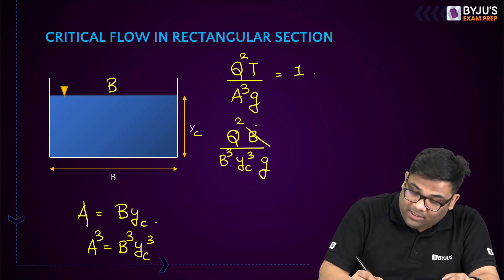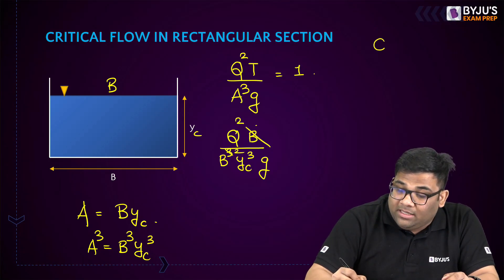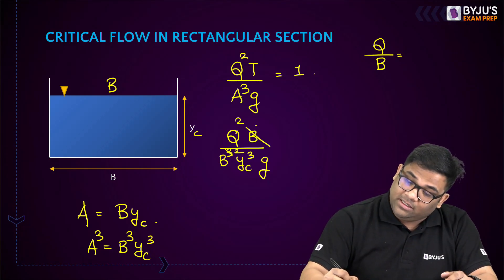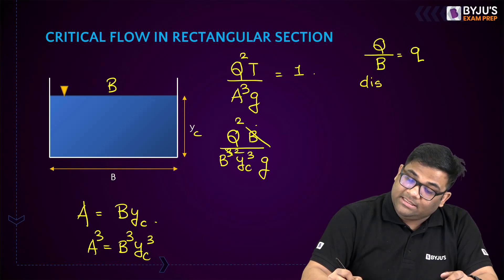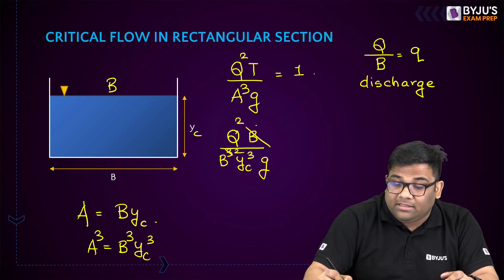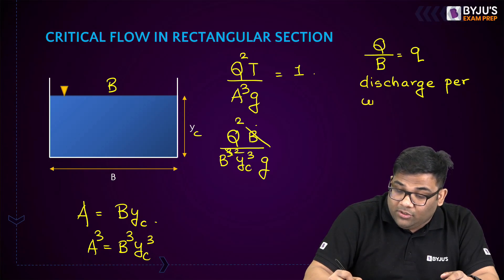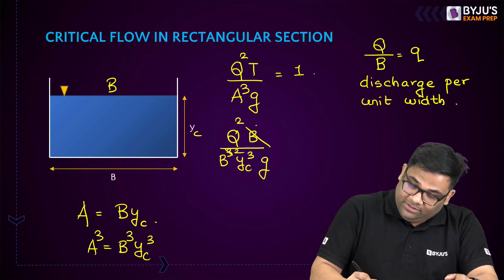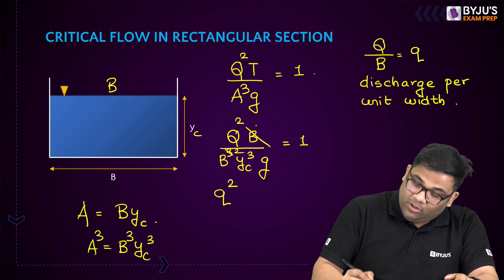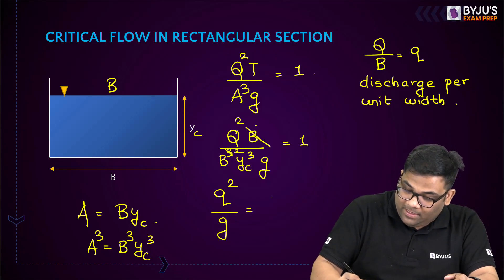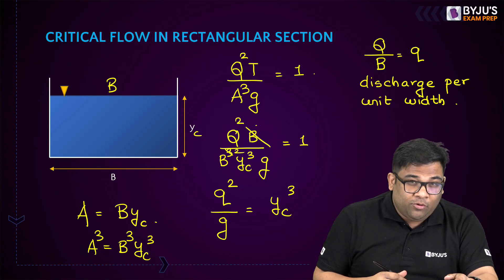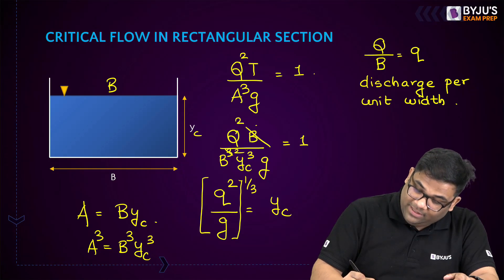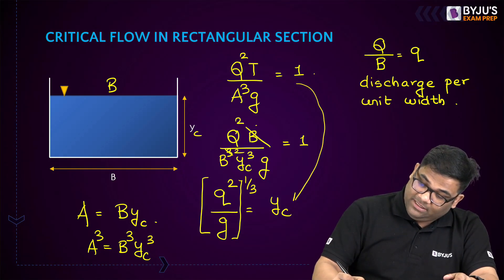After the B squared term cancels, I introduce small q equals Q by capital B — discharge per unit width. The equation becomes q squared by G equals Yc cubed. Taking cube root of both sides: Yc equals (q squared by G) to the power 1 by 3.